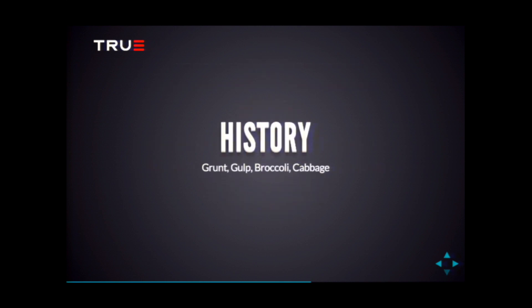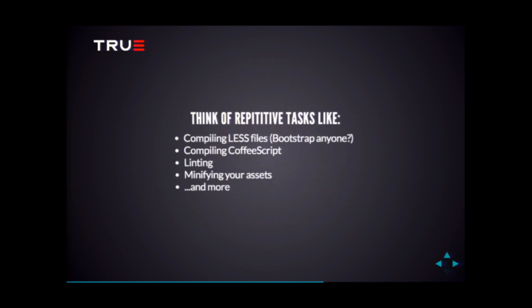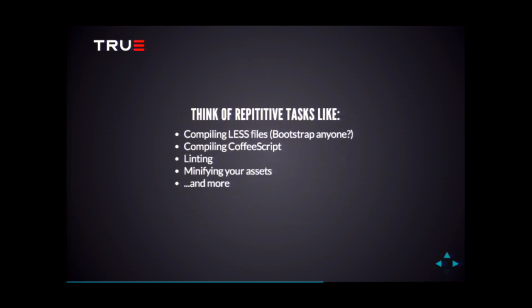Let's go a bit into the history of it. There was Grunt, then a few months later there was Gulp, then Broccoli — and who knows, maybe Cabbage next. Just pick any name and put a JS on the end and you have a brand new library. Think of repetitive tasks: you want to compile your LESS files, as Anna was mentioning about Bootstrap, or compile your CoffeeScript files. You can use it for linting too. Basically you can put any kind of commands in there, even execute shell commands.